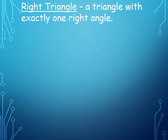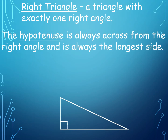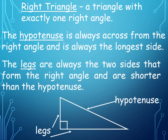What is a right triangle? A right triangle is a triangle with exactly one right angle. The hypotenuse is always across from the right angle and is always the longest side. The legs are always the two sides that form the right angle and are shorter than the hypotenuse. These are the legs and this is your hypotenuse.